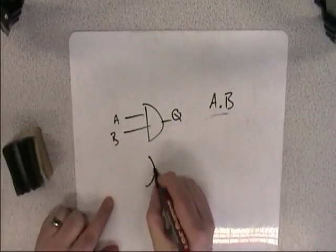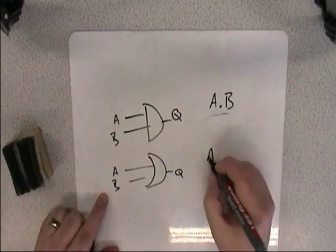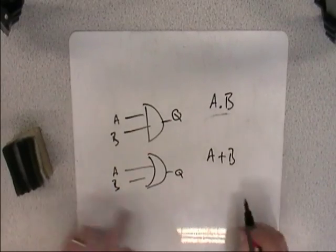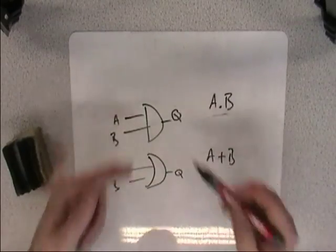An OR gate, we would write it as A or B. And again, that looks like an addition, and that's how we treat it algebraically. So an AND and an OR.